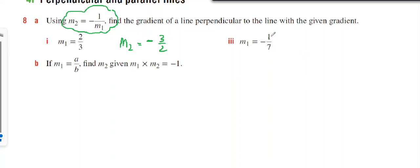If M1 is negative 1/7, then M2 is positive - flip it upside down to get 7/1, which is positive 7. If M1 equals A/B, then M2 is negative and flipped upside down, so B/A. That's how we do question 8 part B.